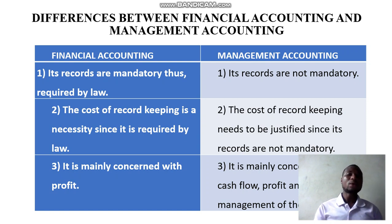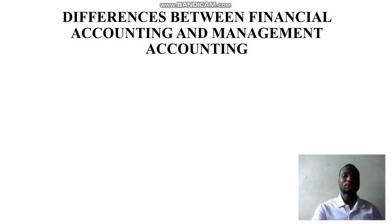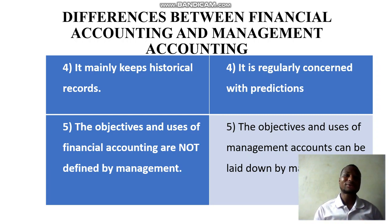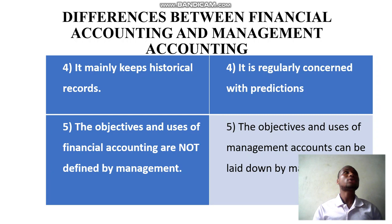Financial accounting is mainly concerned with performance — how much profit has been made, what the loss is, and the financial position. When it comes to management accounting, we are looking at cash flows, profit, and the general management of the business. Financial accounting mainly keeps historical data — information about the past — whereas management accounting is more concerned with future predictions.